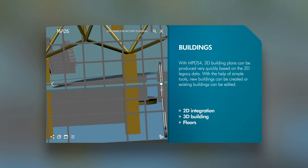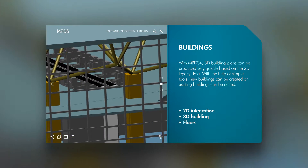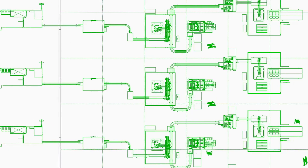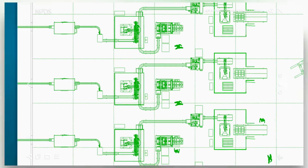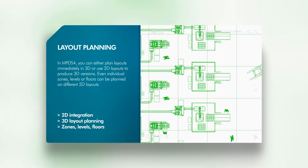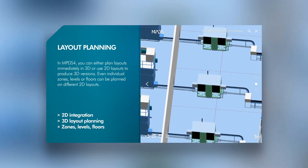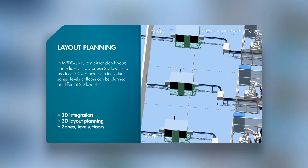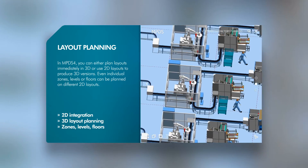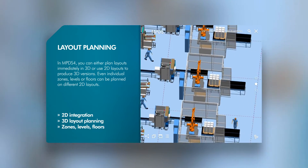With MPDS-4, 3D buildings can be quickly generated from your 2D drawings. Building plans of various formats can be imported and, with simple tools, turned into 3D models. In MPDS-4, you can lay out a design directly in 3D or turn existing 2D drawings into 3D models.